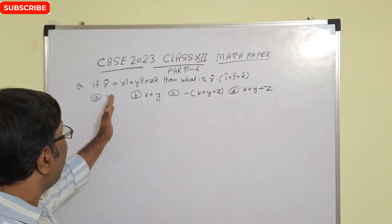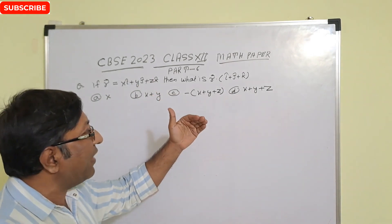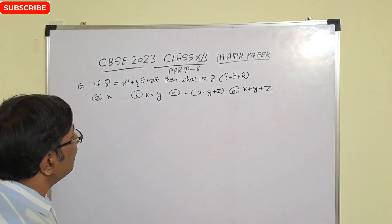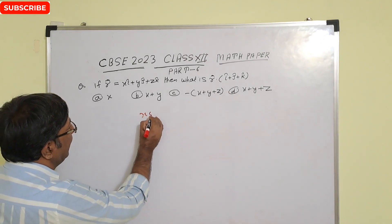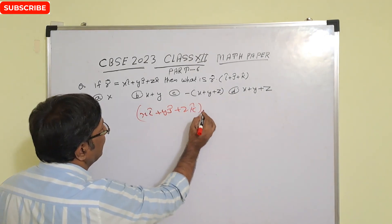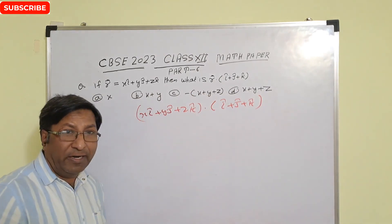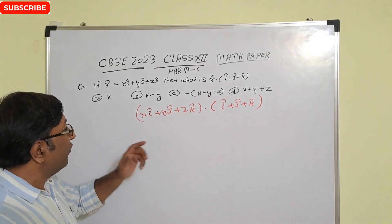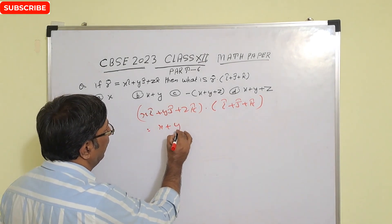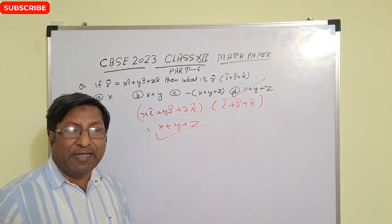If r vector equals x-hat i plus y-hat j plus z-hat k, what is r vector dot (hat i plus hat j plus hat k)? Since i dot i equals 1, j dot j equals 1, k dot k equals 1 (and cross terms are 0), multiplying out gives x times 1 plus y times 1 plus z times 1, which equals x plus y plus z. So option D is the correct answer.